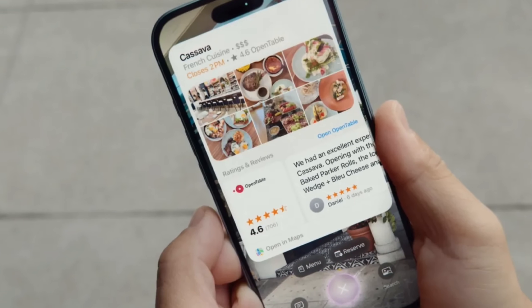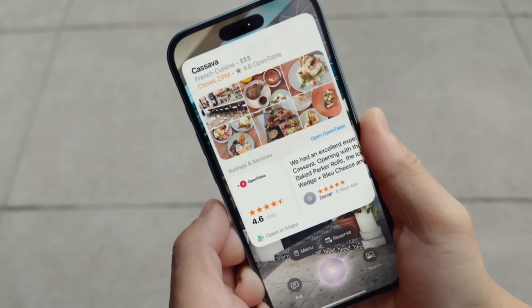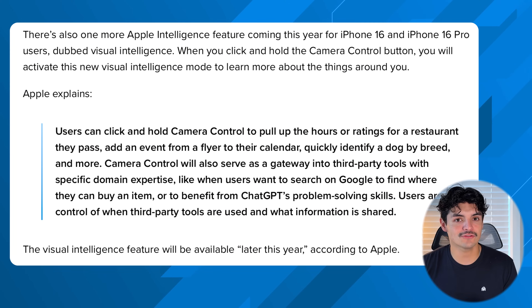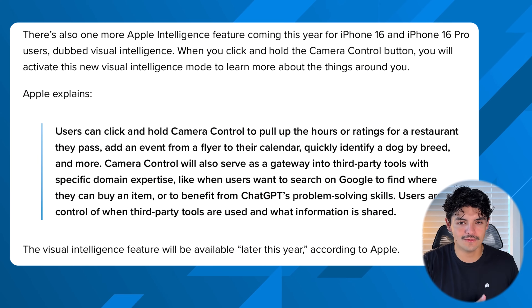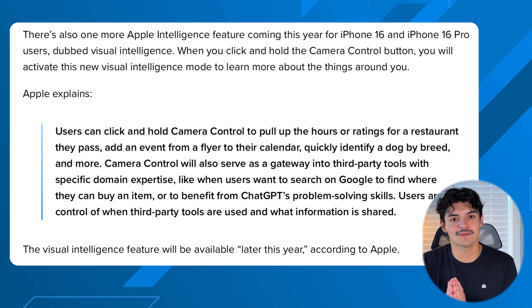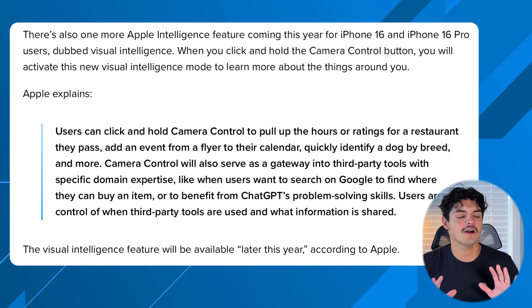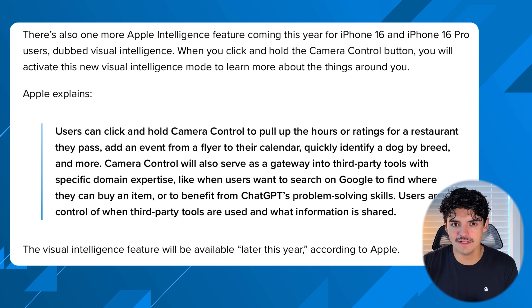The Camera Control button will also finally enable Visual Intelligence, bringing Apple Intelligence into the real world. You can quickly press the Camera Control button, take a photo of a concert poster, a phone number, or a restaurant menu to instantly translate text, save a date to your calendar, or look something up. This will be useful across many verticals — from entertainment to accessibility for people who are hard of sight or hearing.